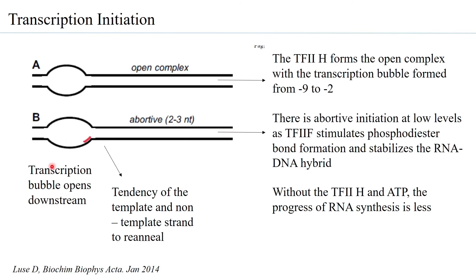When TF2H opens up the DNA to form the open complex and through its helicase activity begins unwinding the DNA, what is observed is that the upstream part of the transcription bubble remains as it was initially formed. What is opening is only towards the downstream — the transcription bubble has increased in size but the opening has only happened at the downstream side.